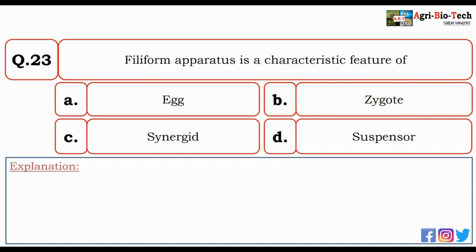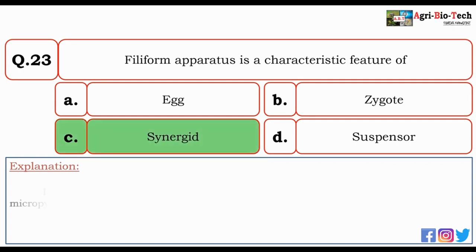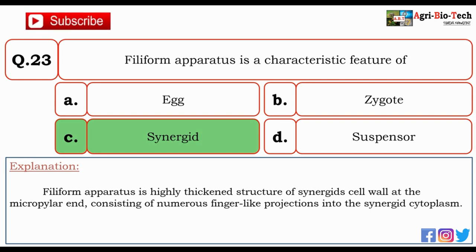Next question: filiform apparatus is a characteristic feature of — egg, zygote, synergid, or suspensor? The correct option is C — synergid. The filiform apparatus is a highly thickened structure of the synergid cell wall at the micropyle end, consisting of numerous finger-like projections into the synergid cytoplasm.